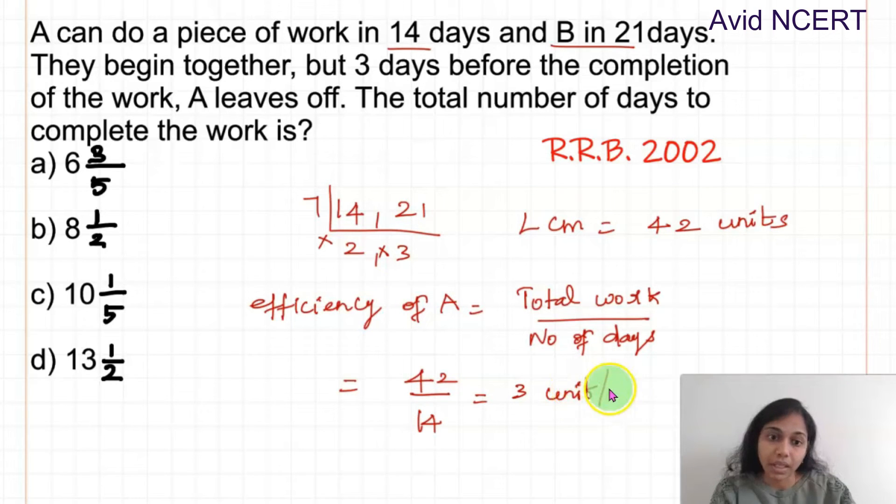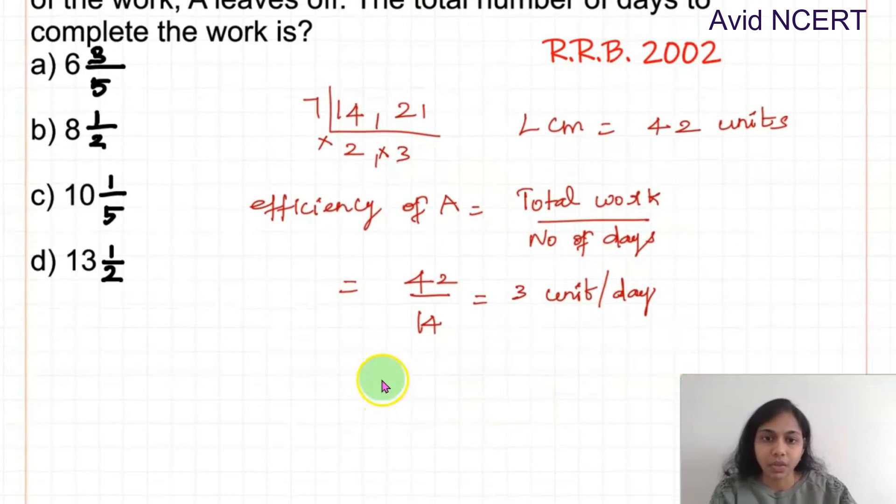And for B it is 42 divided by 21. So which equals for B, efficiency of B is 42 divided by 21 which equals 2 units of work per day.